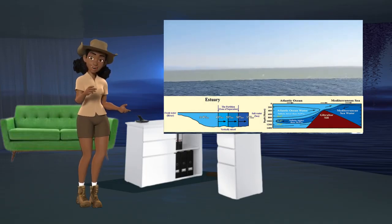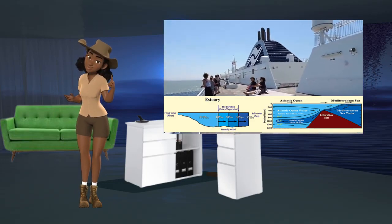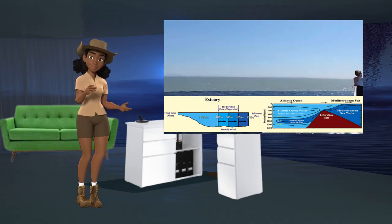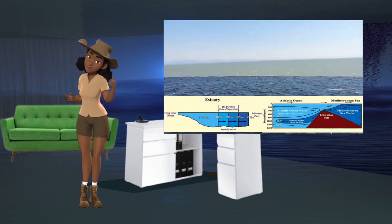When Mediterranean seawater enters the Atlantic over the Gibraltar Sill, it moves several hundred kilometers into the Atlantic at a depth of about 1,000 meters with its own warm, saline, and less dense characteristics. The Mediterranean water stabilizes at this depth.